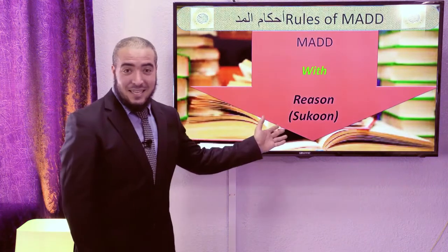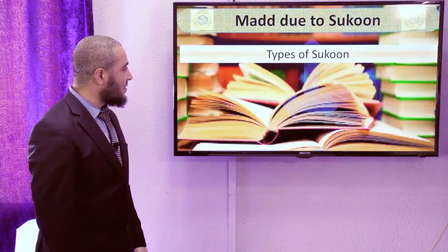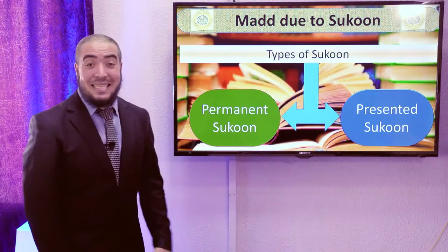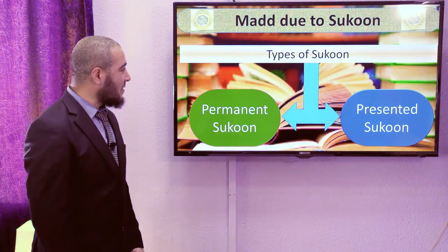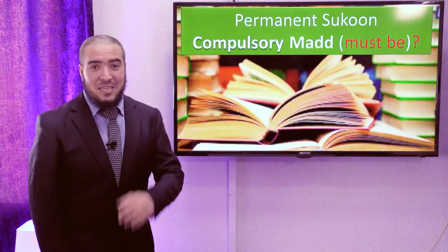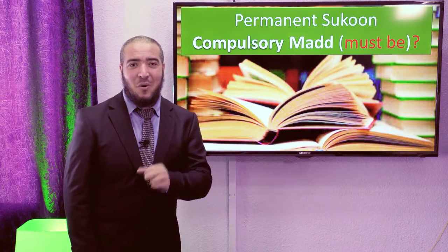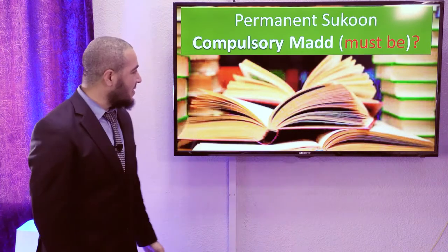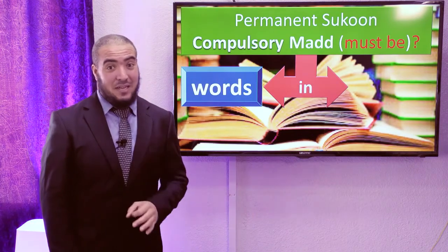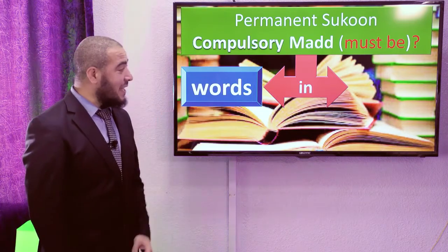Mad with Al-Sukun as the reason. Types of Sukun: we have Permanent Sukun and we have Presented Sukun. From Permanent Sukun comes Compulsory Mad. Be patient and you will understand the meaning of Compulsory Mad. The reason for Compulsory Mad is Permanent Sukun, which you can find in words and in letters.